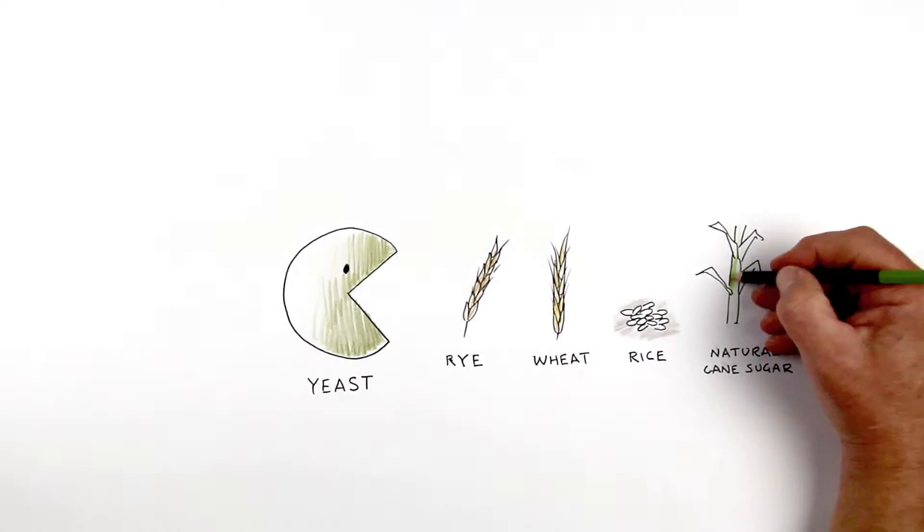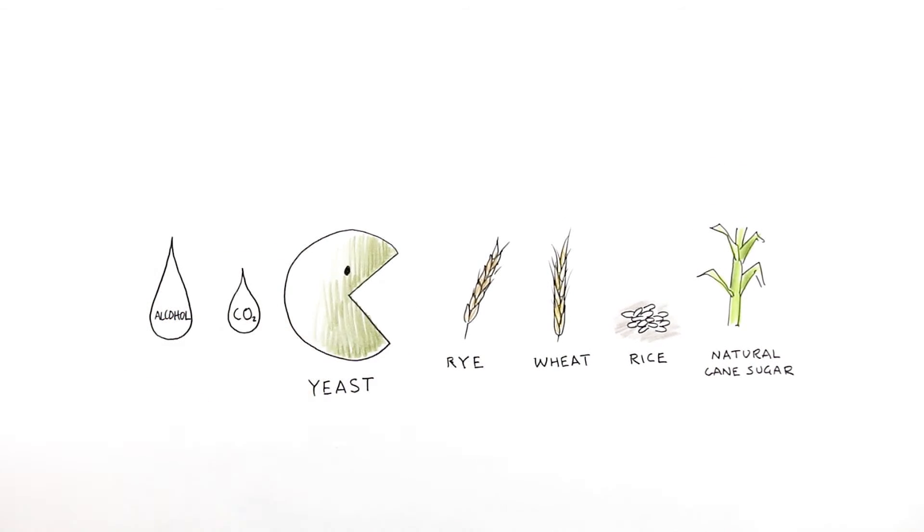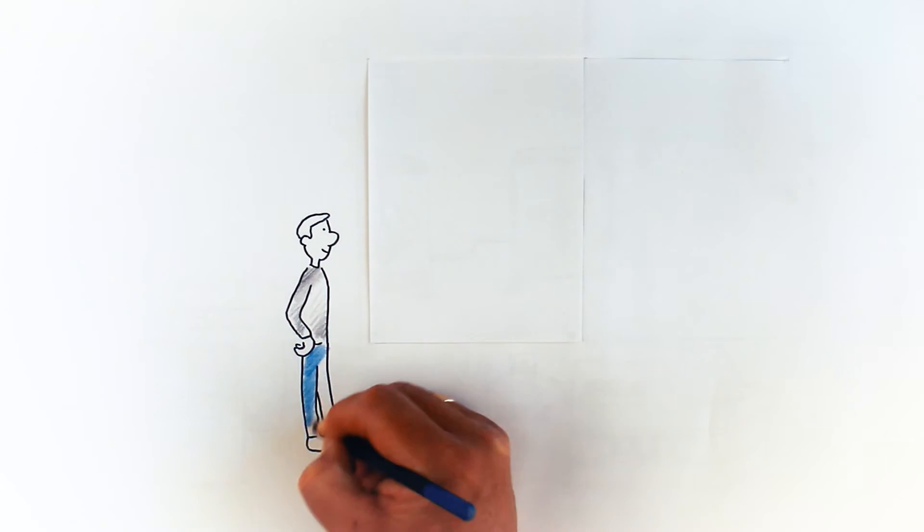Luckily for us, natural cane sugar is one of the best and purest kinds of sugar. But we only add enough to help our yeast metabolise during the fermentation process and produce a slightly drier finish to the beer. By the end of fermentation, there's almost no sugar left in beer. On average, it's 99.9% sugar free.